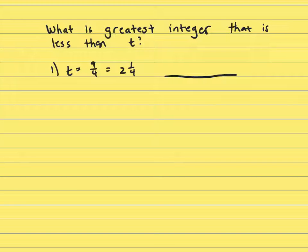So, if this is 2 and 1 fourth, what is the greatest integer that is less than t? That would be 2. That's the greatest integer less than t. So clue 1 works.